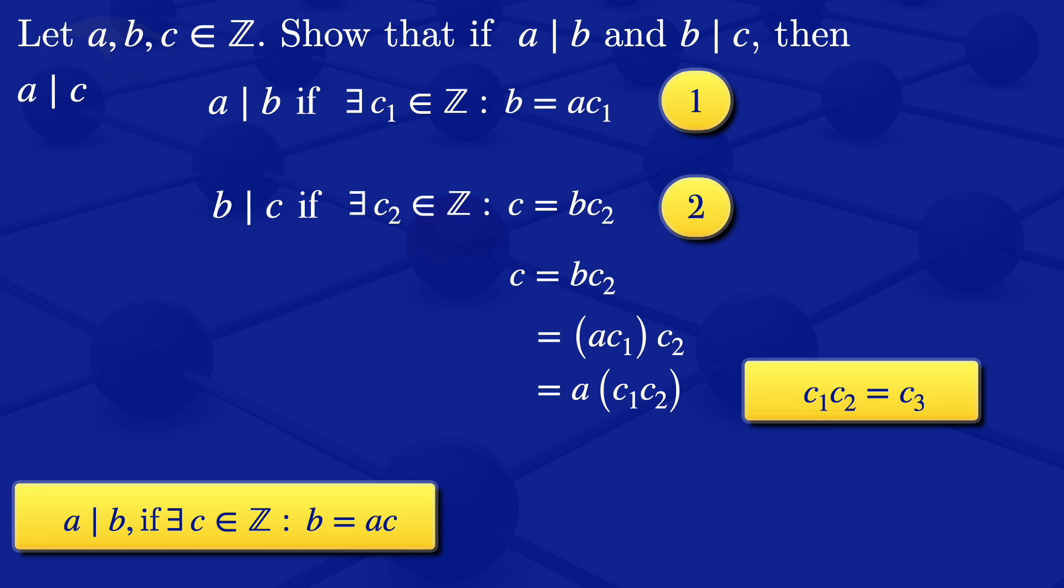So C1 times C2 is equal to C3. So our equation then becomes AC3.